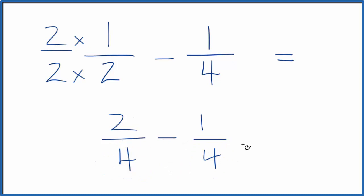Two minus one, that's one. And then we just keep the four across. One fourth. So one half minus one fourth, that gives us one fourth.